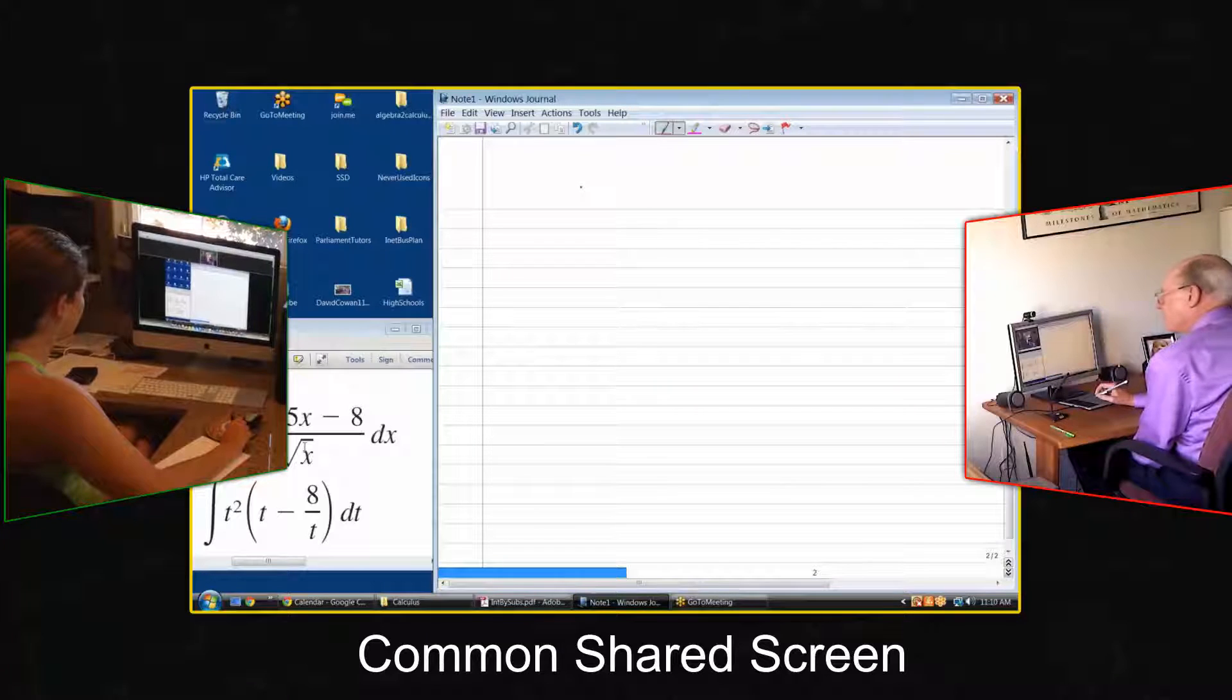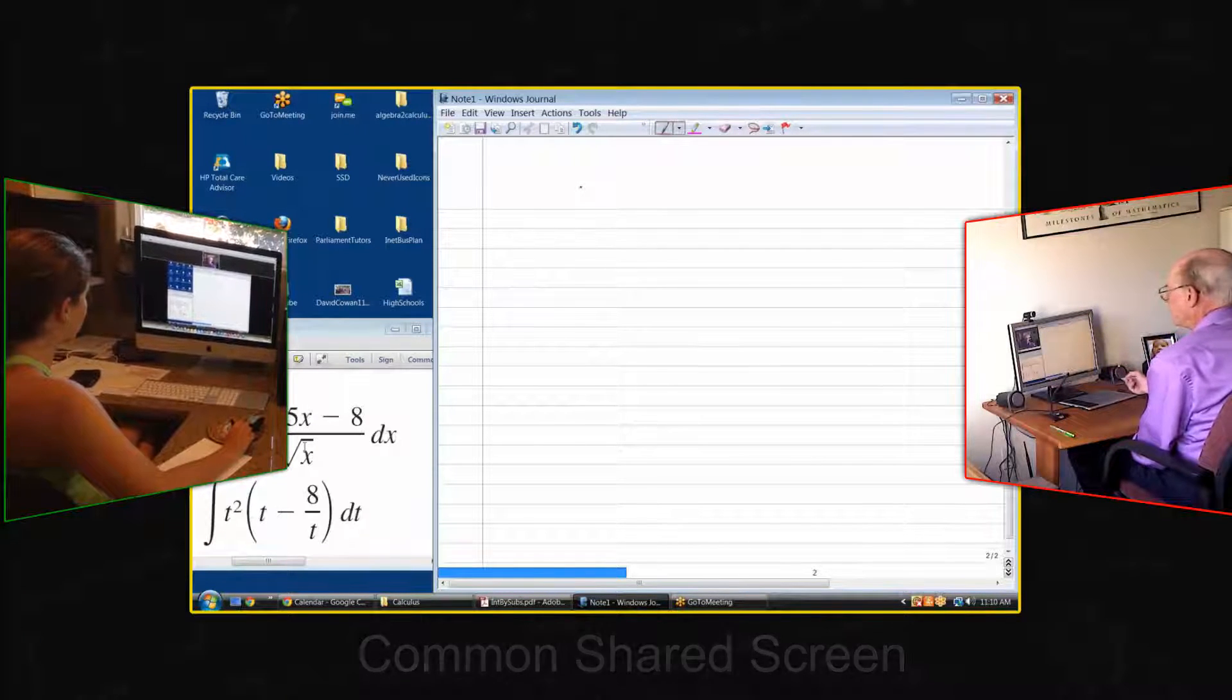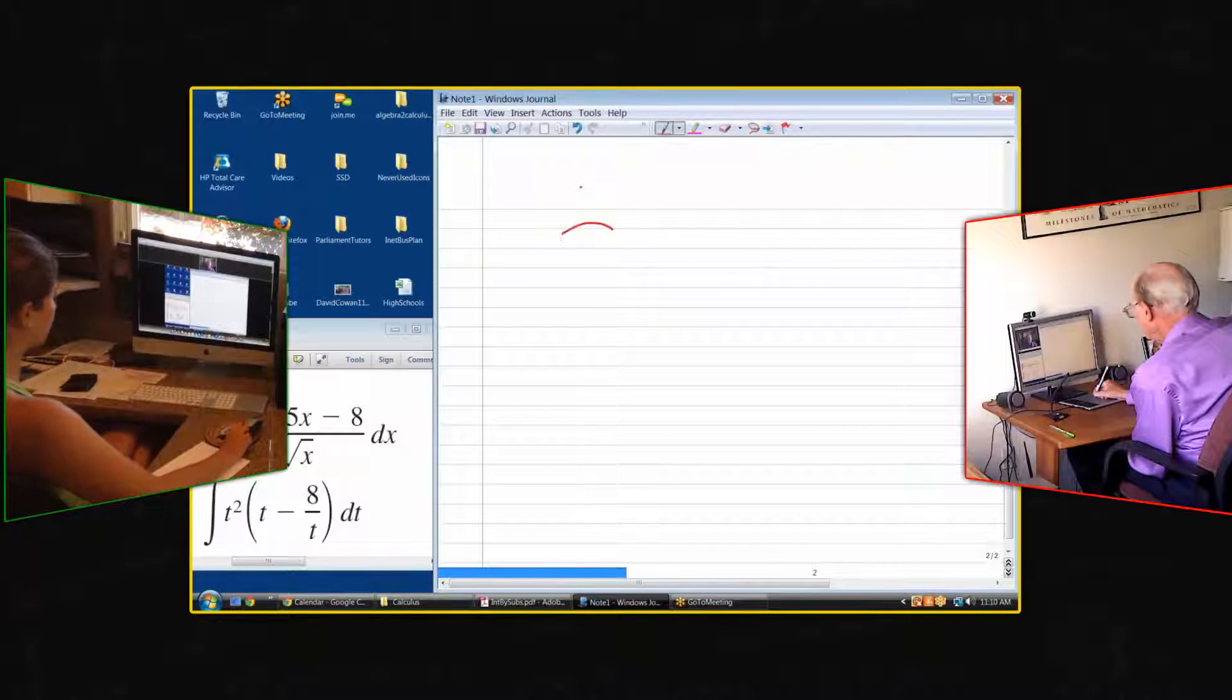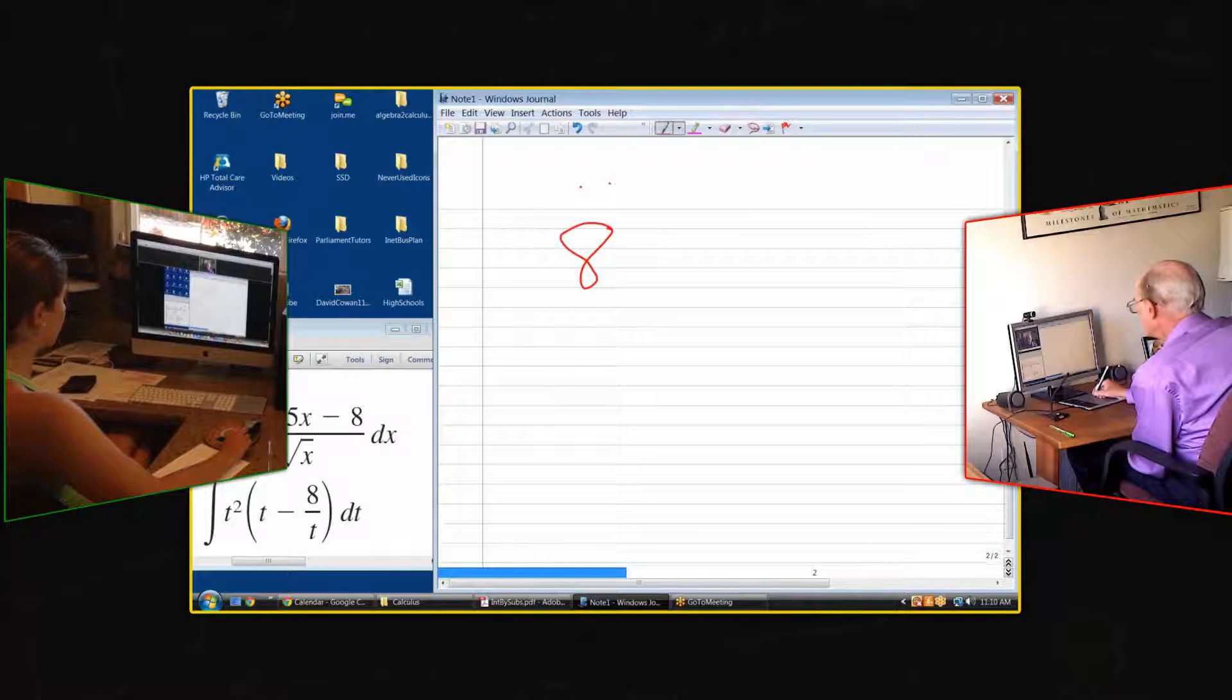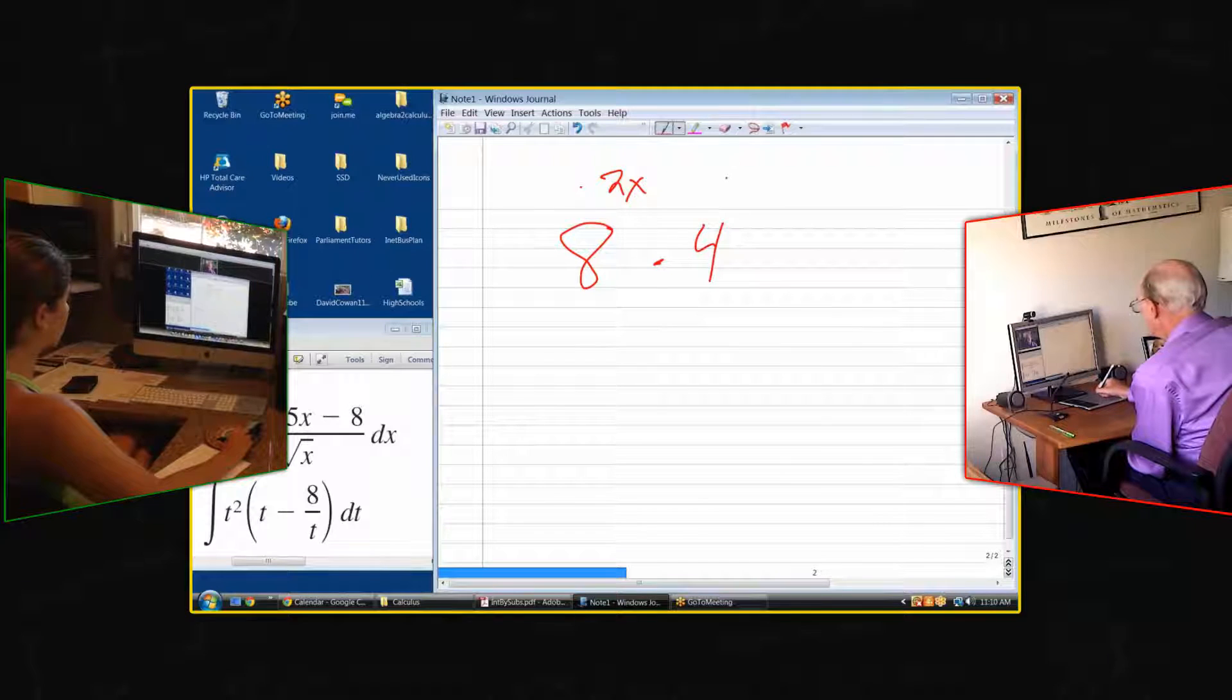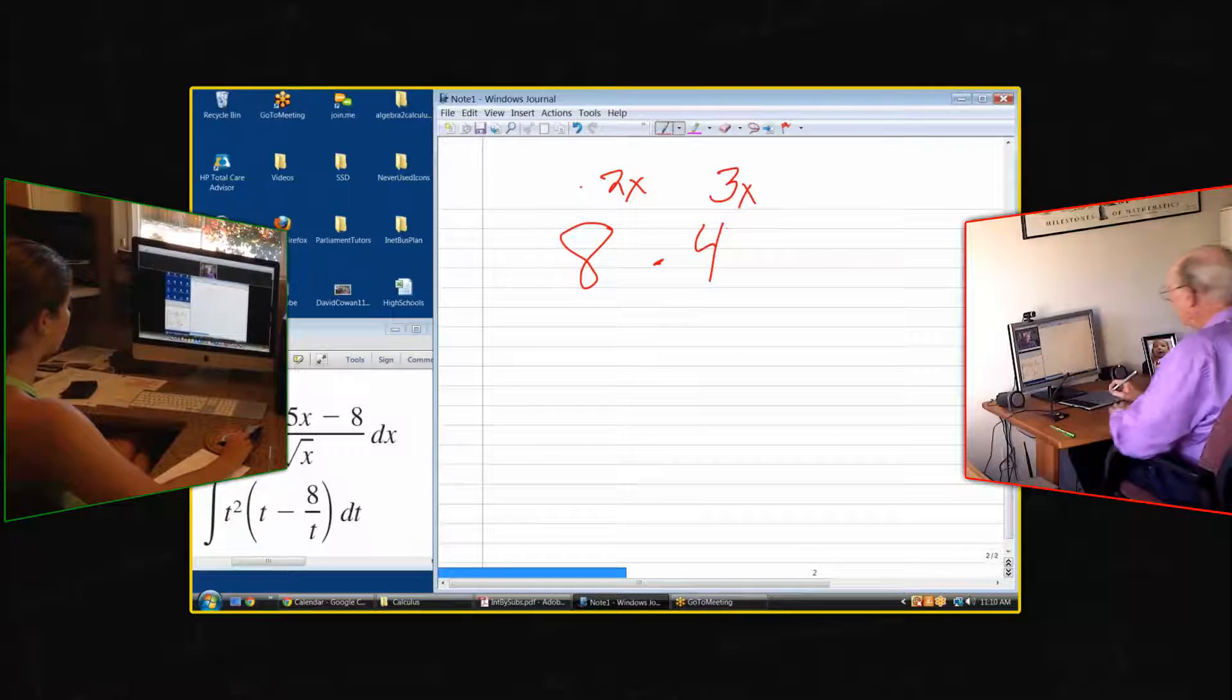If we're going to verbalize a problem, either one of us could verbalize it. For example, let's take the exponential expression 8 to the 2x times 4 to the 3x. How would we simplify that?